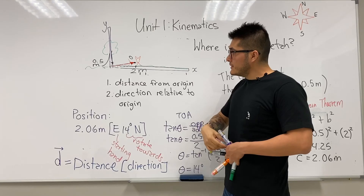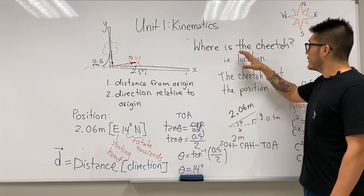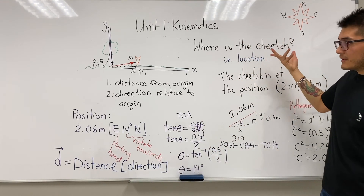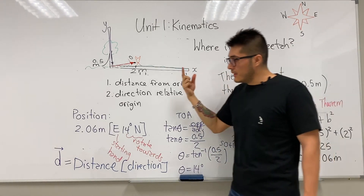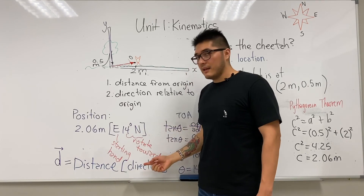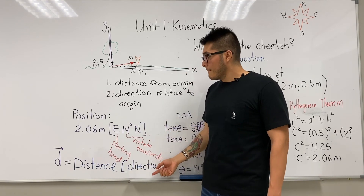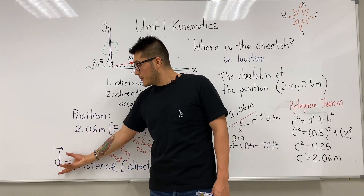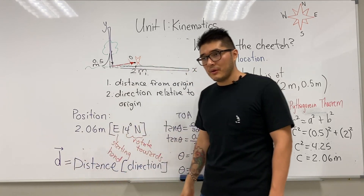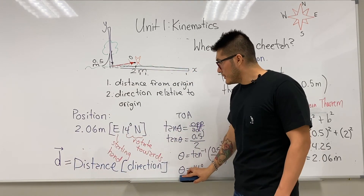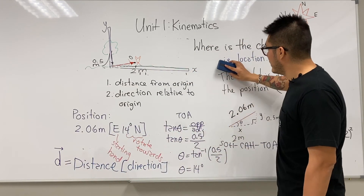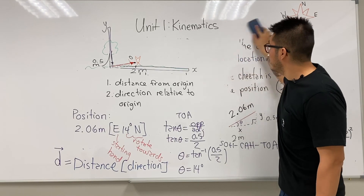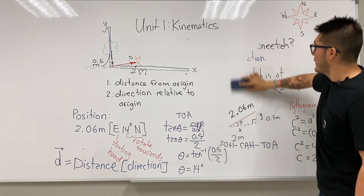In conclusion, to describe where a cheetah is — its location or position — you need both distance and direction. It turns out this is a new quantity known as a vector quantity. Let's finish with the definition of what a vector quantity is before moving on.